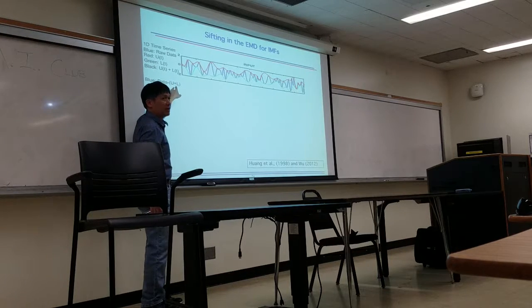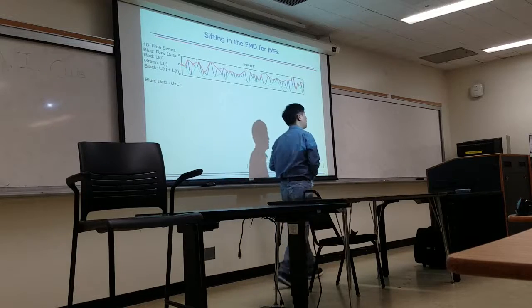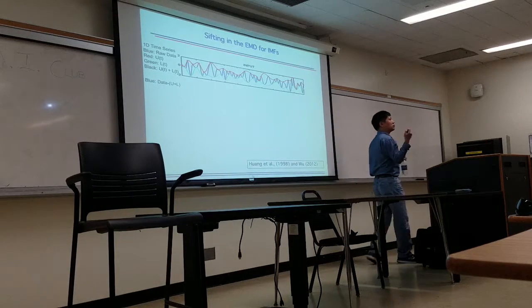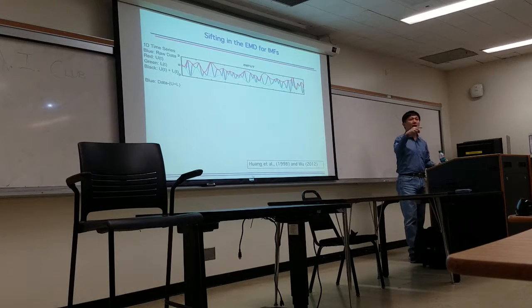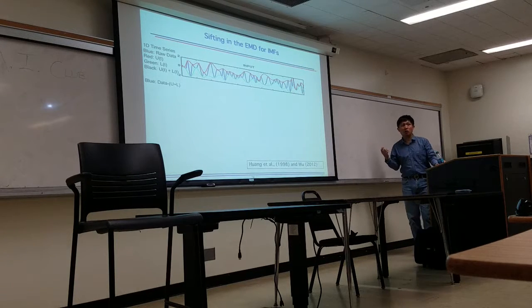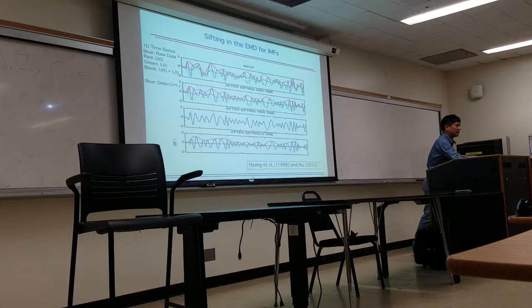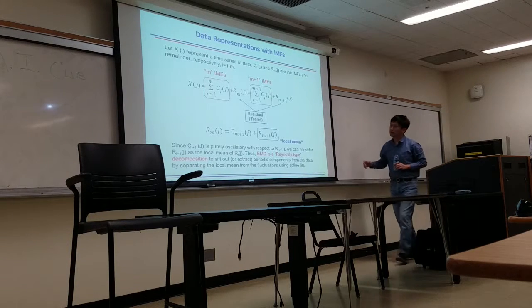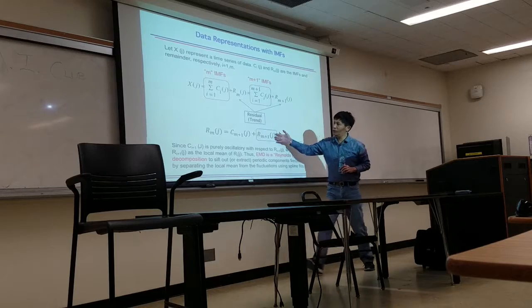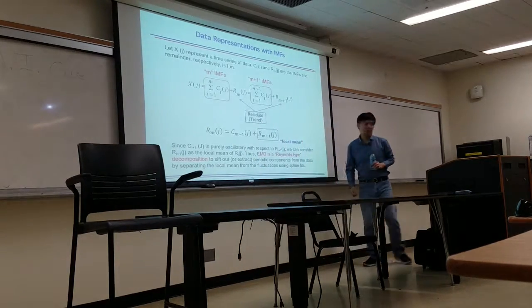So we obtain the local mean, subtract the local mean from the data, then we continue. The whole idea is that we try to extract our oscillatory component by removing the local mean, simply speaking. So we end up having this kind of mathematical equation. I'm not going to go to the details, and we will discuss here a little bit more in the next slide.